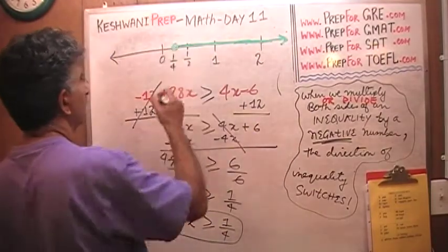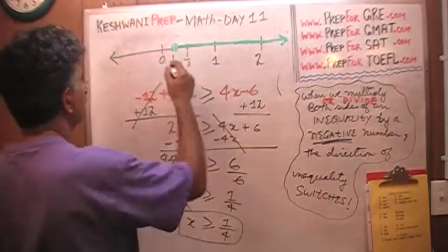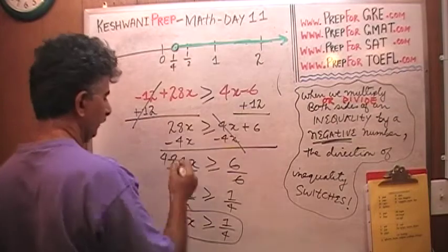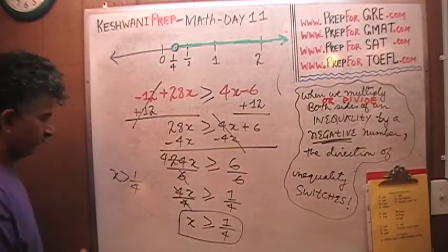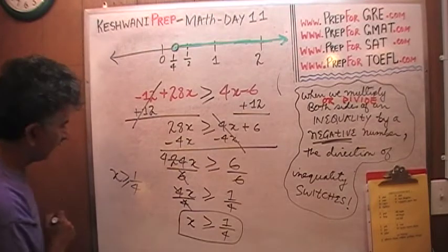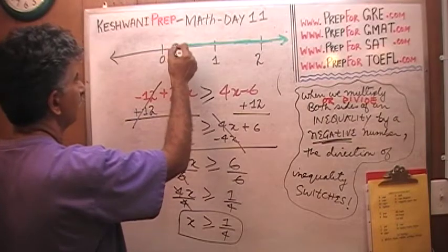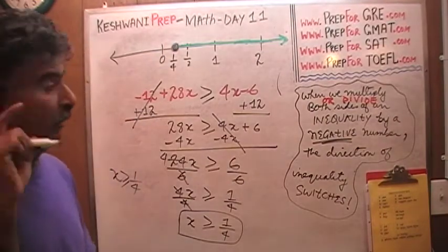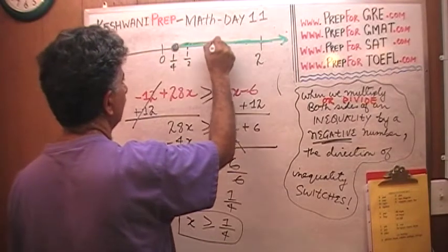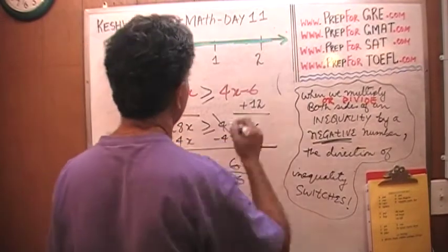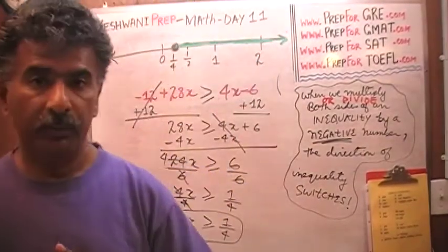And the closed circle — the circle is closed. Had it been an open circle, that would mean x is strictly greater than one quarter. But here it says x is greater than or equal to one quarter, so we close the circle. One quarter is included, and there is your graph — starting from one quarter all the way to infinity. That is the graph of the inequality.